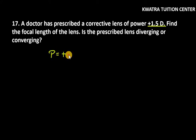So power is given. It is plus 1.5 diopter. We need to find focal length. Focal length is 1 over P, or you can write it as 1 over 1.5 diopter. So when you solve 1 over 1.5,